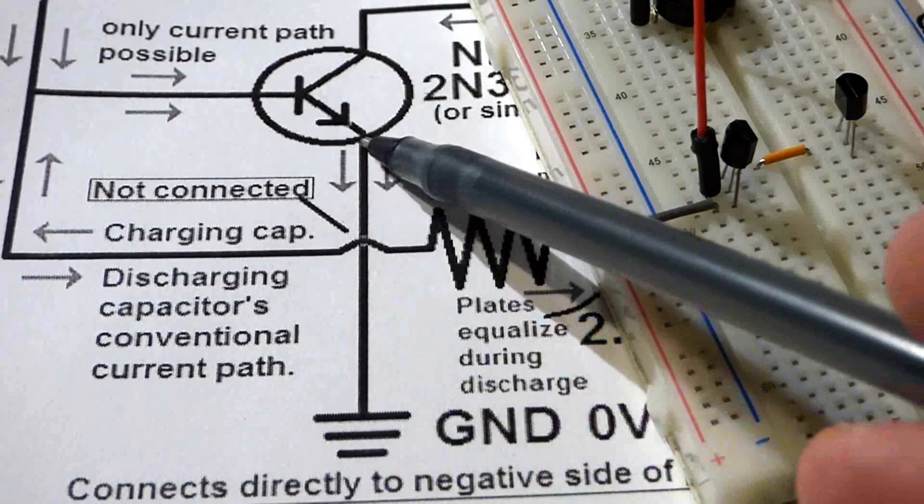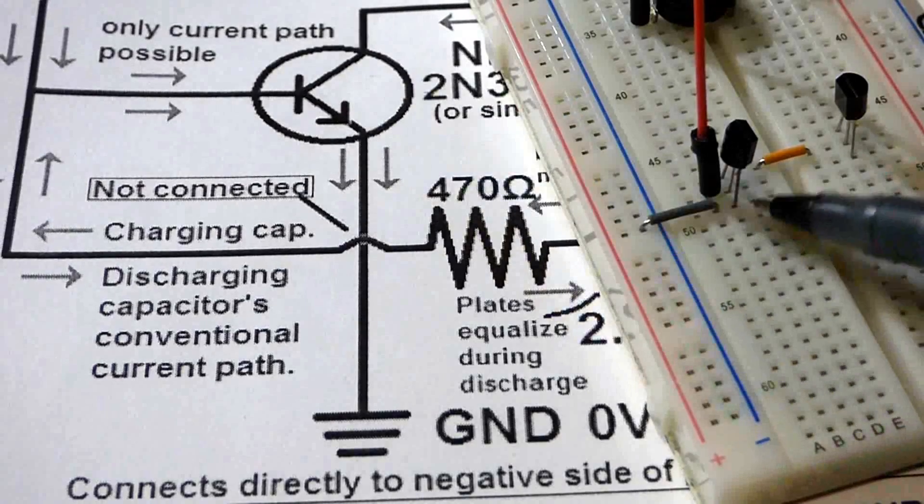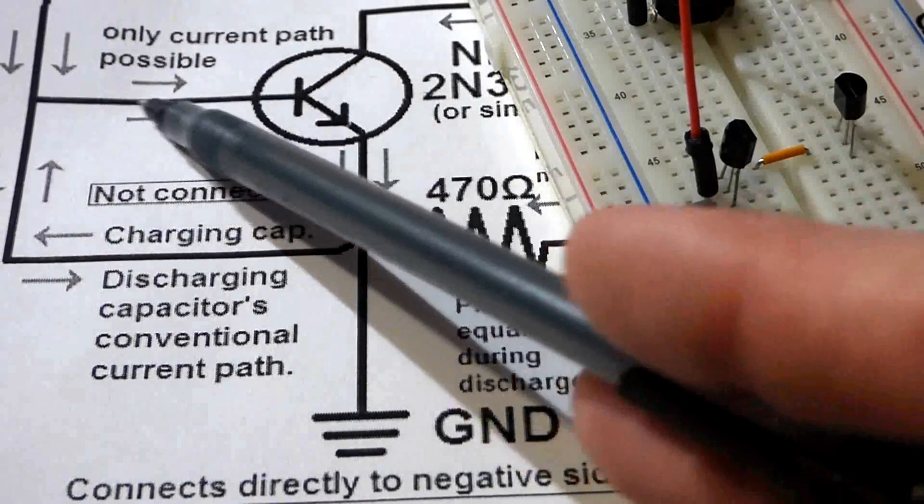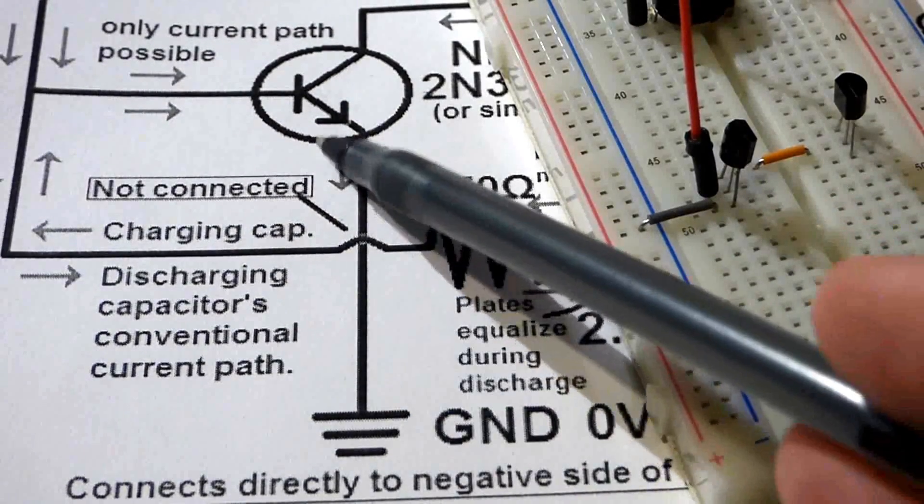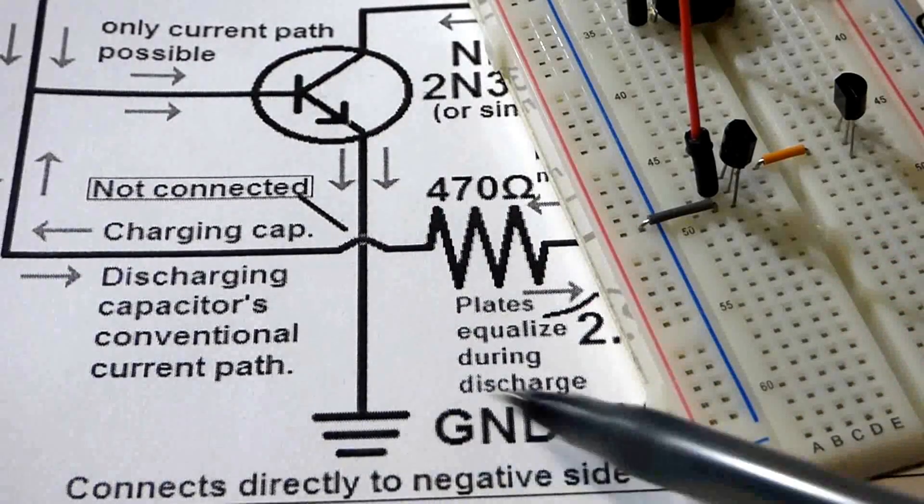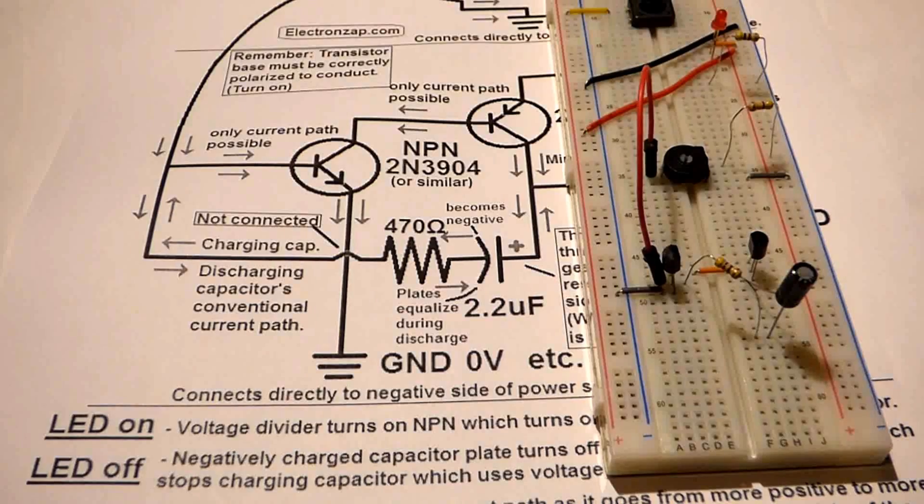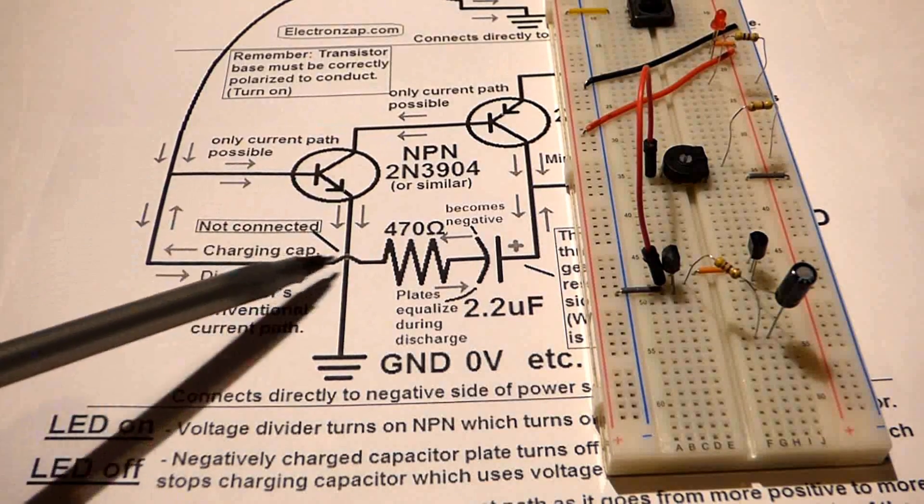So whatever connections go to the arrow directly are to the emitter of the transistor. And positive is always on this side of the arrow going this way to negative. So the arrow is always pointing to negative—that's just a little trick to memorize.